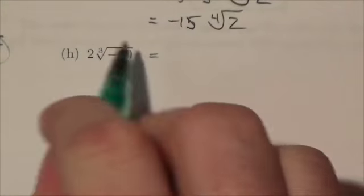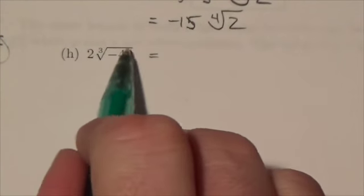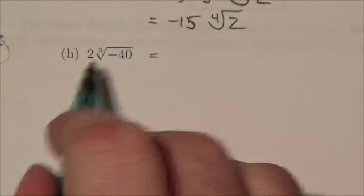What I have to do is I have to write this in simplest mixed radical form. Again, this is an interesting one because there's a number out front. So whatever I pull out of the cube root here, I'm just going to multiply it by that coefficient.